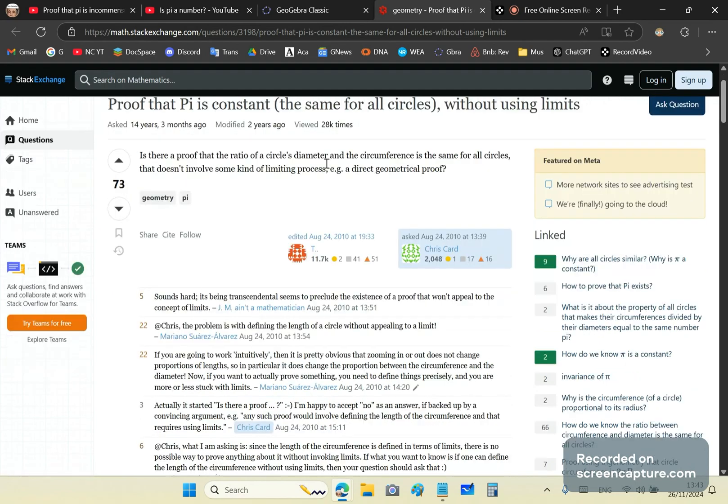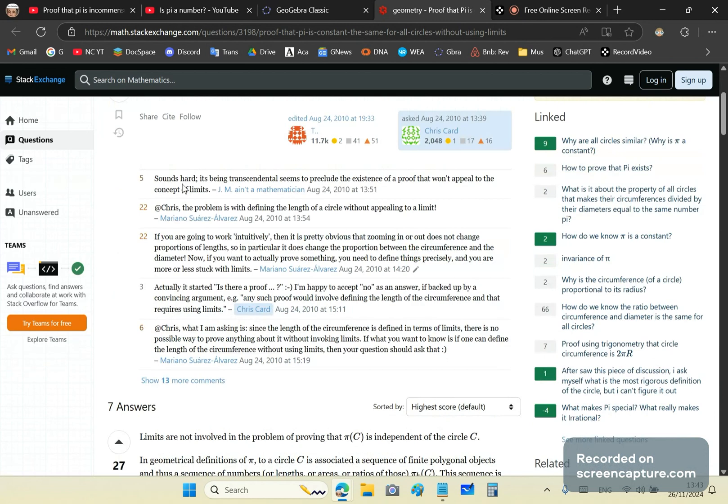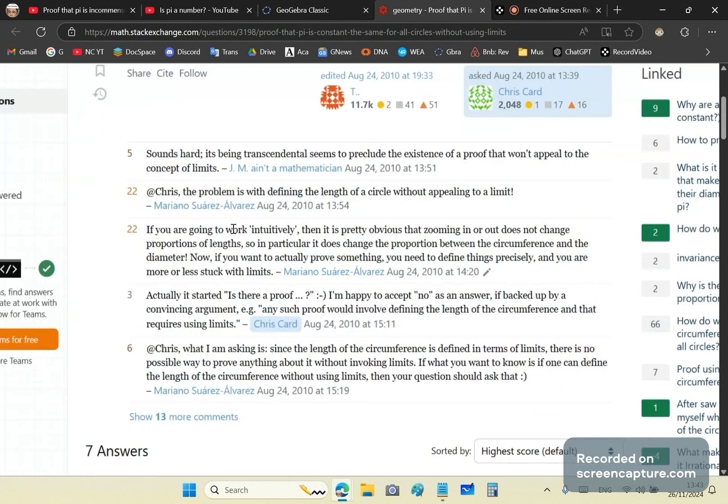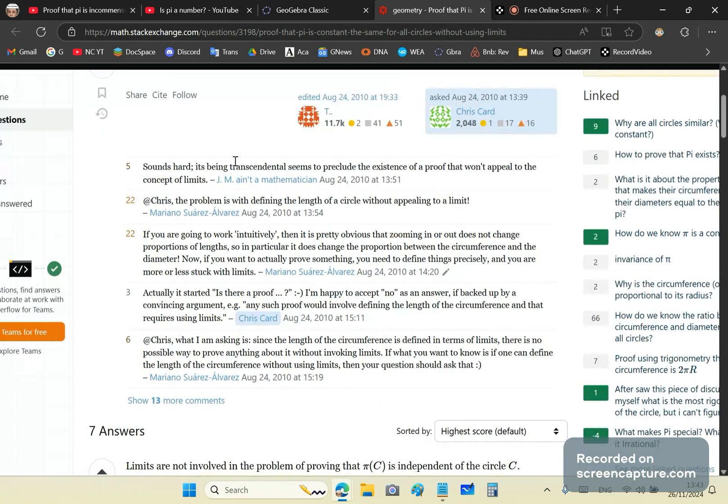So a lot of confusion here in the answers. Here this guy says, it sounds hard, it being transcendental seems to preclude the existence of a proof that won't appeal to the concept of limits. You aren't a mathematician, that's for sure. And this guy here says the problem is with defining the length of a circle without appealing. So a lot of garbage.